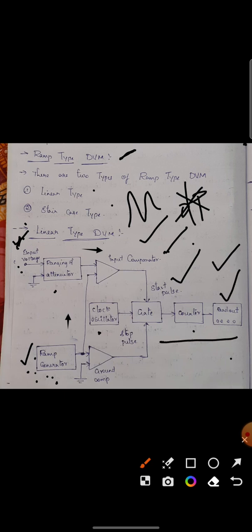This process continues until the input voltage and ramp generator value are equal. Then there is no output produced.